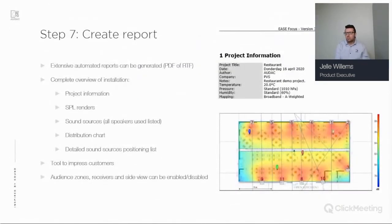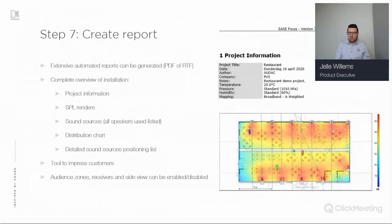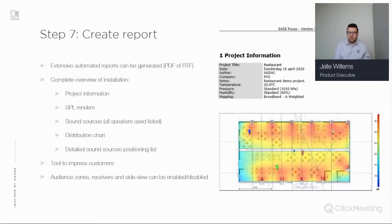One of the final steps is to create the report. It's an extensive automated report that can be exported in PDF or RTF. It gives you a complete overview of your project: SPL renders, project information like title, date, and author, notes, all speakers used, a distribution chart, and a detailed sound source positioning list showing how every speaker in the room is positioned — each speaker is numbered on the map. It's a good way to impress customers.